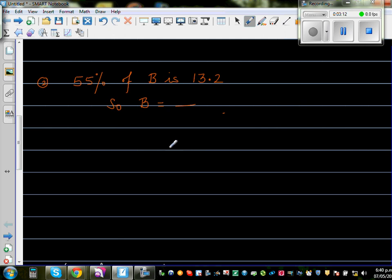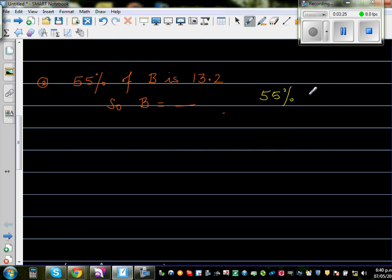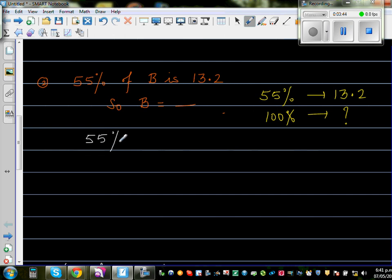Let's look at the next question. 55% of B is 13.2. You want to find B. So again, the question is you want to find 55% of something which is 100% is given to be 13.2. So your question is you want to find what is 100%. So if you want to find 5%...